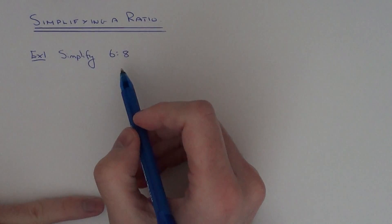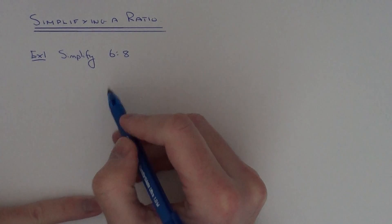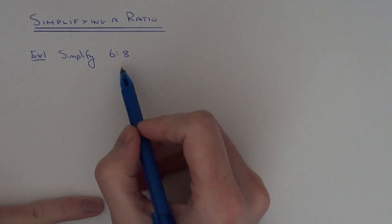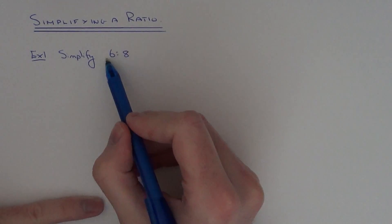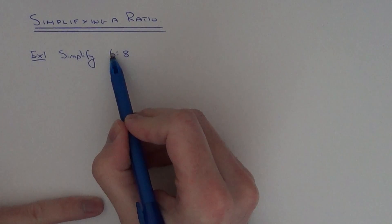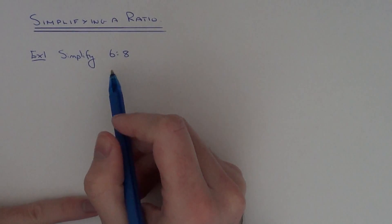Simplifying a ratio is very similar to simplifying a fraction because all you need to do is look for the highest common factor of the two numbers in the ratio and divide each side of the ratio by this highest common factor.